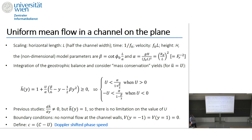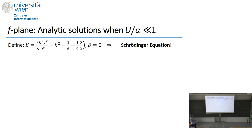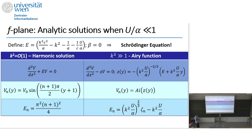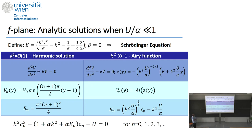For small wavenumber k, this equation can be approximated by a Schrödinger-type equation with harmonic solutions and discretization of energy levels. For larger k, we can define a new variable Z and obtain an Airy equation, which also has known solutions and gives discretization of energy levels.